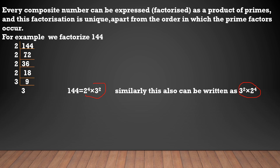If you observe these two expressions, in the first I took 2 first and then 3; in the second I took 3 first and then 2. If you disregard the order, we can say this is unique, because we have only 2 and 3 in this prime factorization — and here also only 3 and 2. So apart from the order in which the prime factors occur, this factorization is unique. There is no other way to write this if you ignore the order.